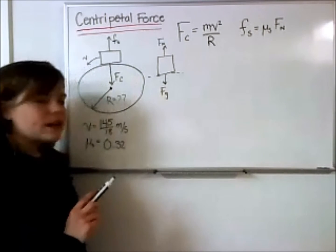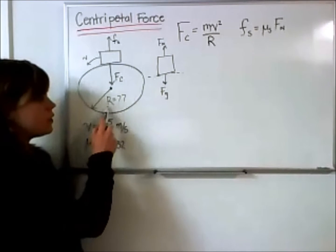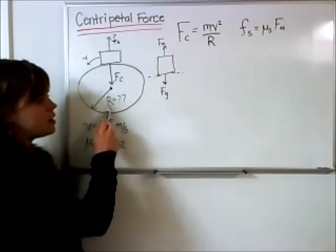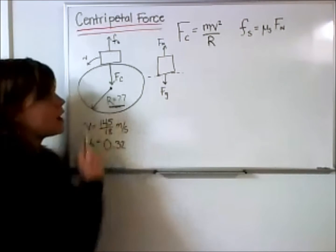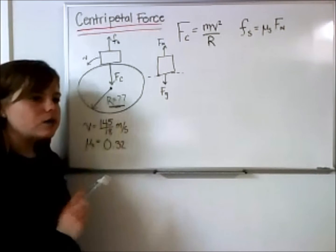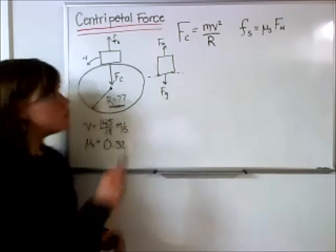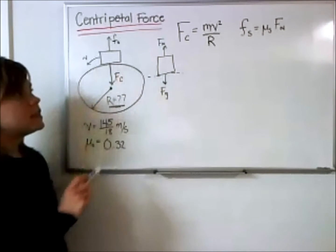So now that we have all that set up, what we are looking for, and the unknown here, is the radius of this track. So what is the minimum size that this radius can be, so that as this car goes around, it doesn't slip.